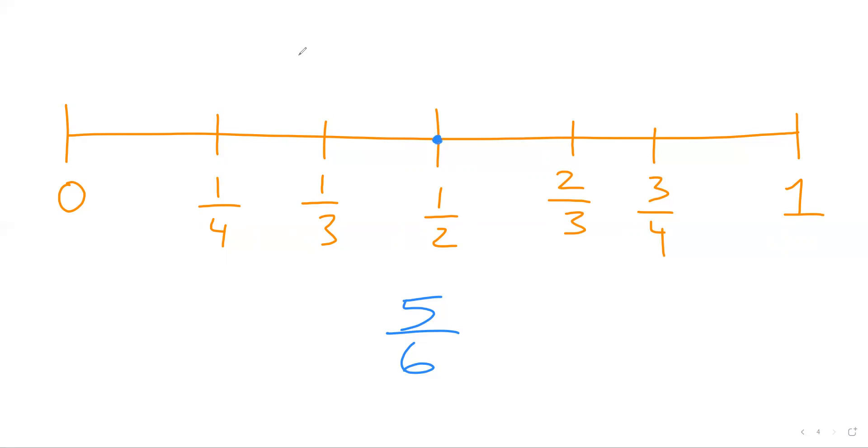So the first things first is always I really think you try to anchor it to the half benchmark and kind of see where it lies there. So we know if this was half, it would have to be three sixths, right? Because again, half would be half the numerator, half the denominator, half of it. Again, if that was a model and I had six pieces, well, half of it would be colored in and that's three pieces.